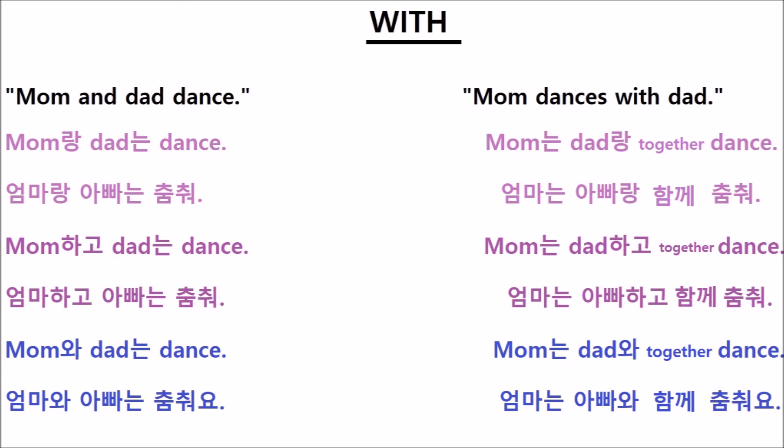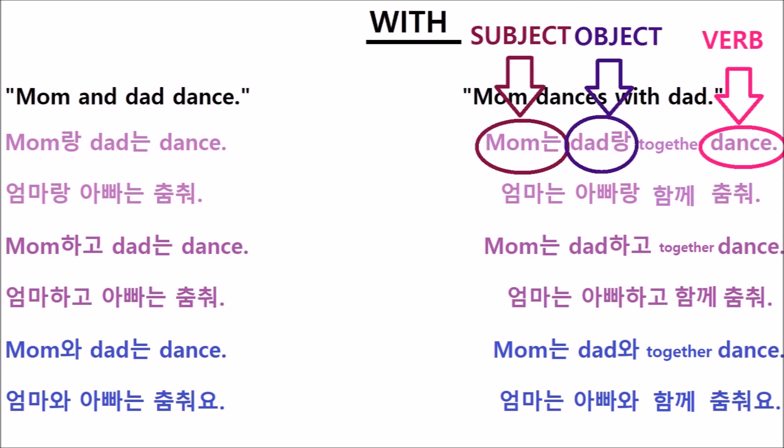Literally: mom, dad, with, together, dance — or 'mom dances together with dad.' It seems a little redundant in English, but in Korean, having the word 'together' in there is very important. You can think of dad as being the object of the sentence, and then notice that we have the same subject-object-verb word order that we've seen before in Korean.